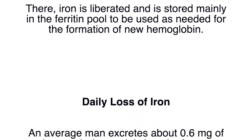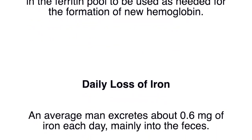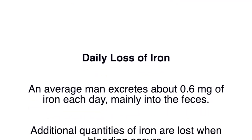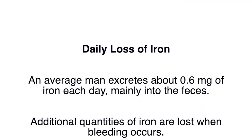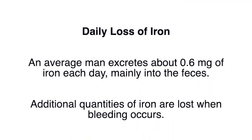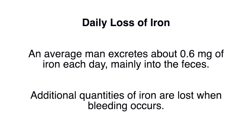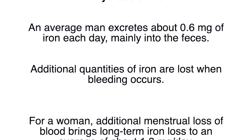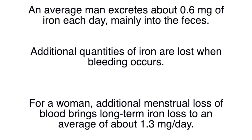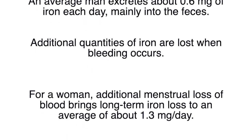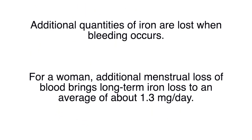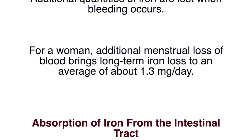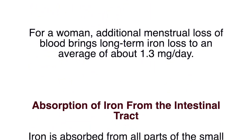Daily loss of iron: An average man excretes about 0.6 mg of iron each day, mainly into the feces. Additional quantities of iron are lost when bleeding occurs. For a woman, additional menstrual blood loss brings long-term iron loss to an average of about 1.3 mg per day.